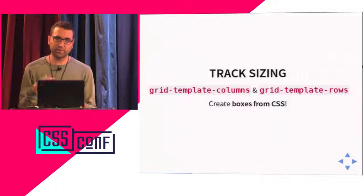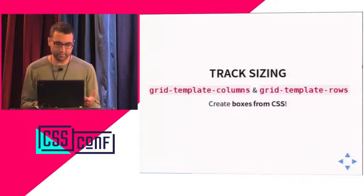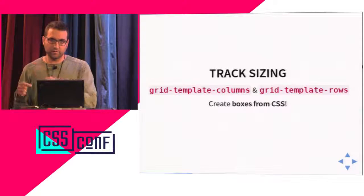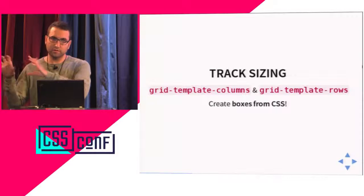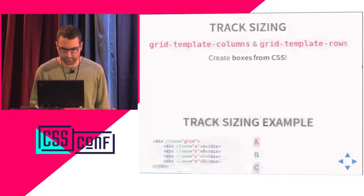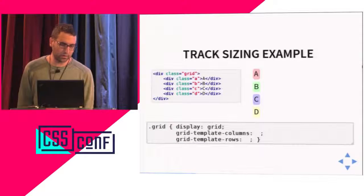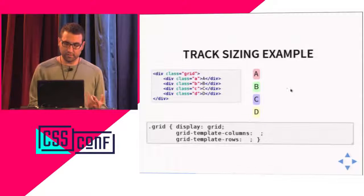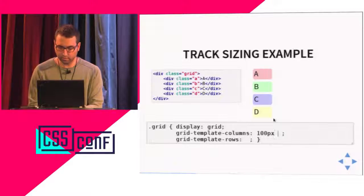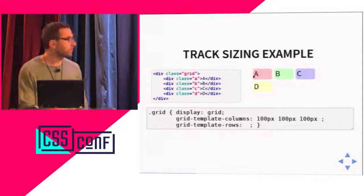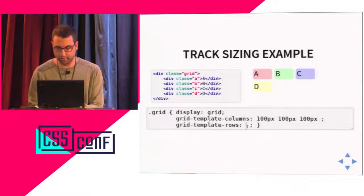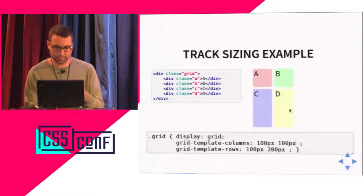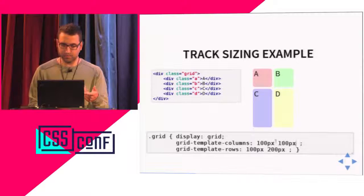We have two main properties to set the structure of the grid: grid-template-columns and grid-template-rows. They're long names but not so hard to remember. The good part is that we are actually creating boxes from CSS, which was not that common before — usually you need a wrapper element in the HTML. But here from CSS we're creating the containing boxes and placing things there. We have three different sizing methods: fixed sizes (like 100px, 100px, 100px — three columns of 100 pixels), intrinsic sizing (using 'auto' — the column is as wide as the content), and flexible sizing using the new 'fr' (free space) unit.